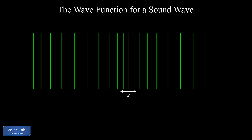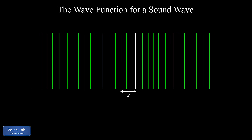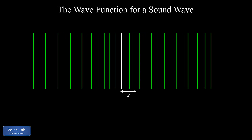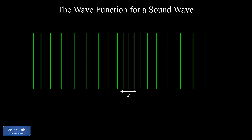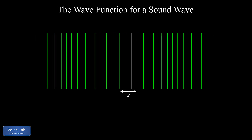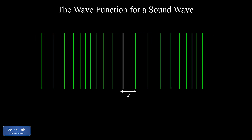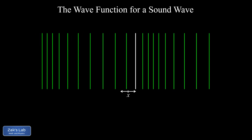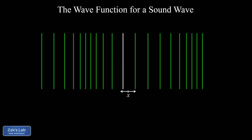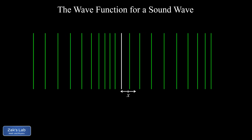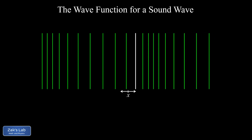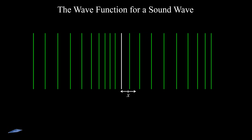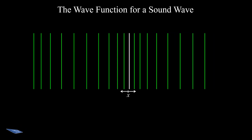In the previous video, we introduced the essential concepts of longitudinal waves using this animation of a sound wave passing through the air. And in this video, we're deriving the wave function for the sound pressure as a function of position and time, and we're going to get a relationship between displacement amplitude and pressure amplitude in a worked example.